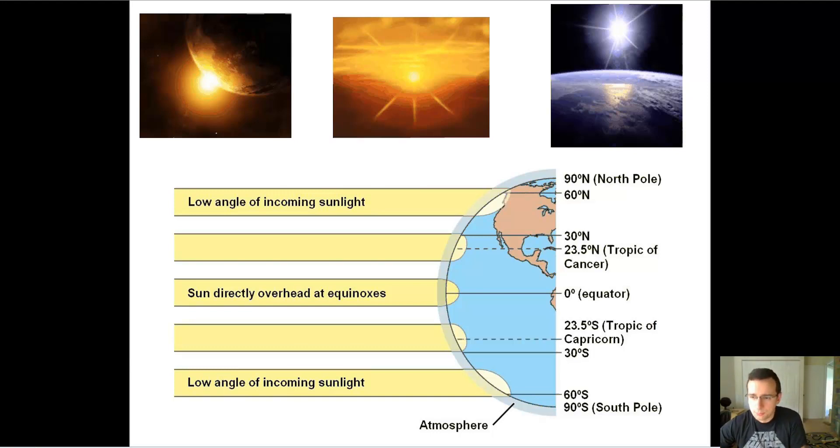So the major factor of climate is definitely going to be sunlight. The sun is the source of energy for earth and so how much sunlight you receive, in other words the amount of exposure, how long you have sunlight and how intense the sunlight is, is going to help determine a lot of the factors of climate including temperature which is one of the most important factors.